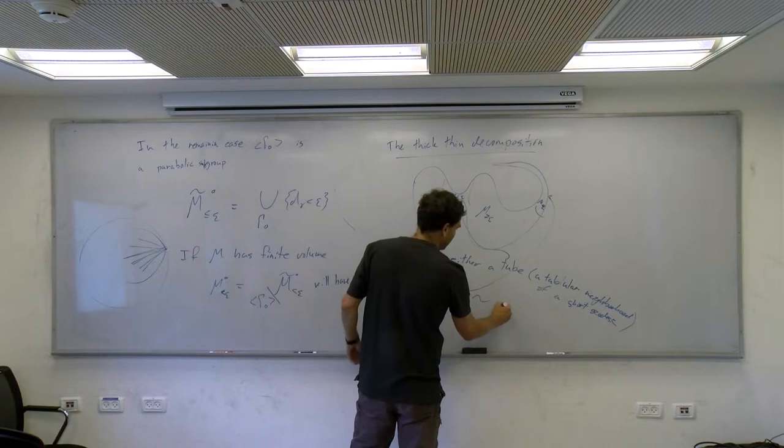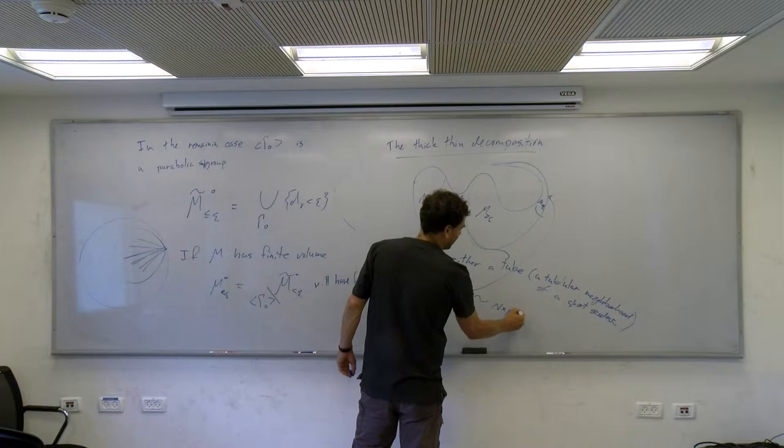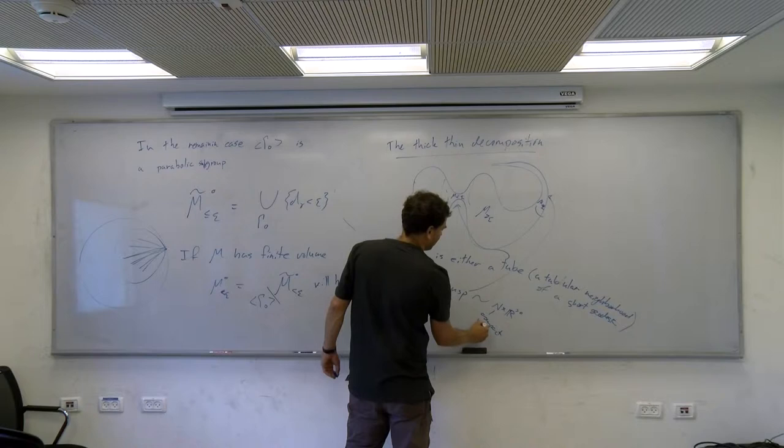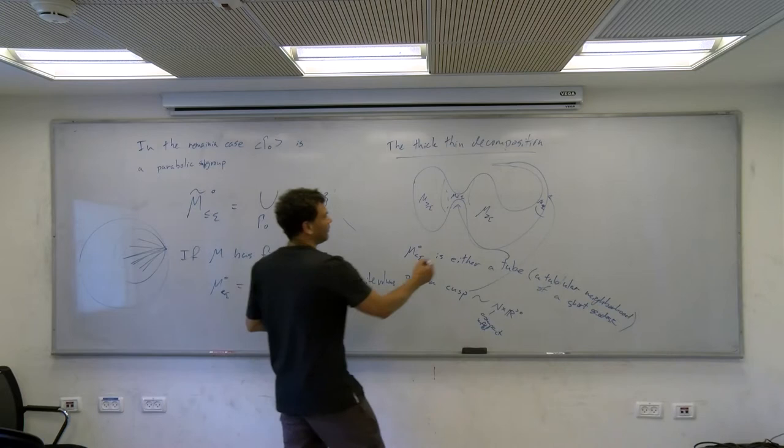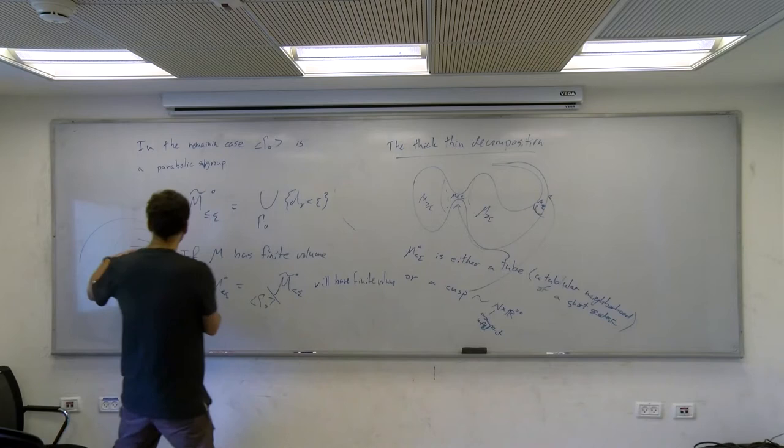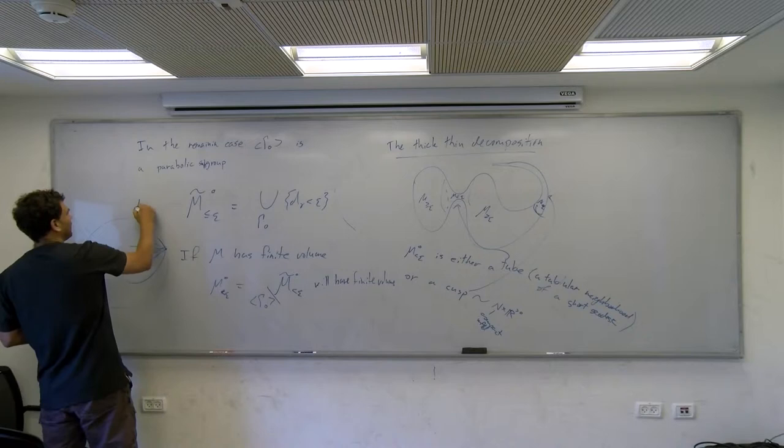A cusp is homeomorphic to N cross R, where N is a compact manifold of dimension one less — so here N would be the circle. This should follow from the fact, which I didn't prove, that the displacement function behaves in a specific way.